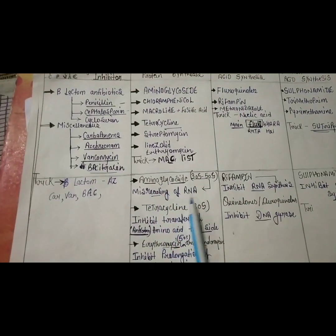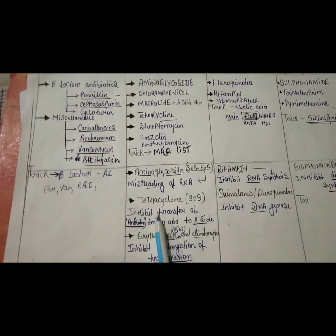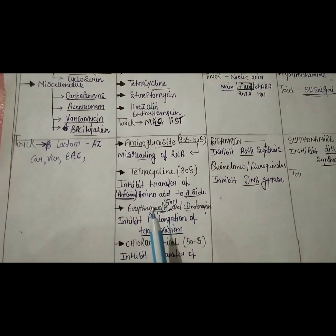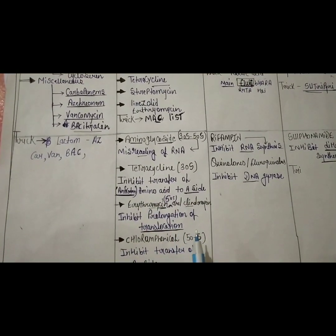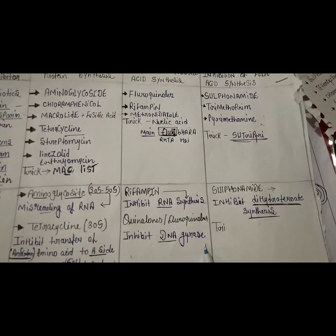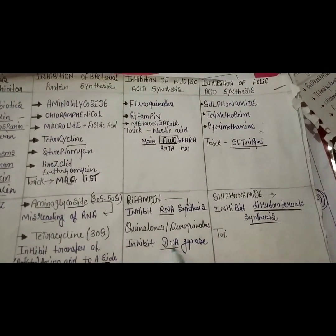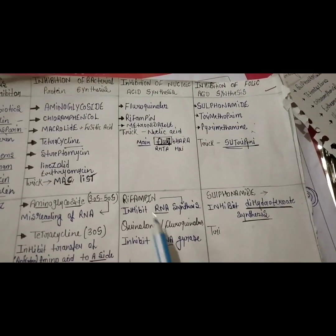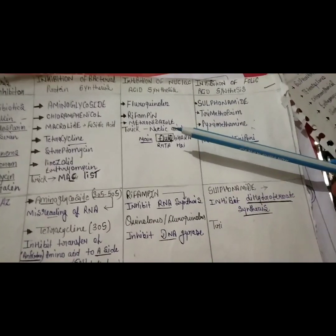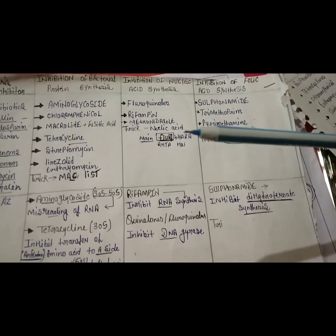For mechanisms of action: aminoglycosides cause misreading of mRNA. Tetracyclines block transfer of amino acids to the A-site. Erythromycin and clindamycin cause prolongation of translocation. Rifampin inhibits RNA synthesis, and fluoroquinolones inhibit DNA gyrase. Nucleic acid drugs target either DNA or RNA synthesis.